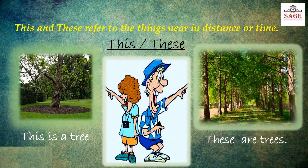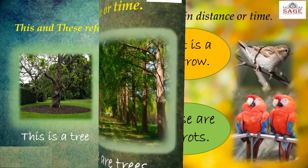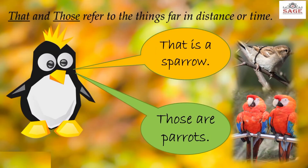Here you can see the examples. This is a tree. These are trees. Here, this and these refer to the things near in distance or time. In this slide, that and those refer to the things far in distance or time. For example, that is a sparrow. Those are parrots.